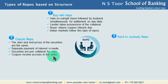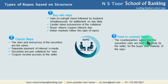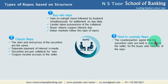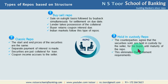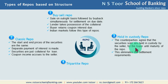The third type under structure is the hold-in-custody repo. As the name suggests, the counterparties agree that the securities that are sold are held in custody by the seller for the buyer until maturity of the repo. So the two parties — say two banks — agree that the securities that have been sold will remain in the seller's custody for the buyer until the repo matures. Ultimately these securities will be purchased back by the seller himself.